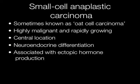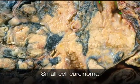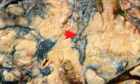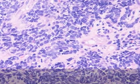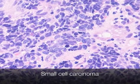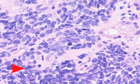Small cell anaplastic carcinoma is sometimes known as oat cell carcinoma. It is a highly malignant and rapidly growing tumour, usually centrally located. Small cell carcinomas show neuroendocrine differentiation and are associated with ectopic hormone production. This is the typical gross appearance of a small cell anaplastic carcinoma. This lung biopsy shows an infiltrating small cell anaplastic carcinoma. The dark areas are the smudged nuclei of the tumour cells.